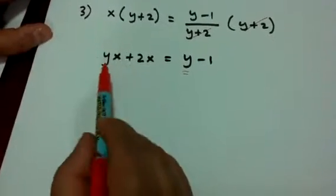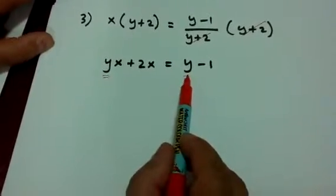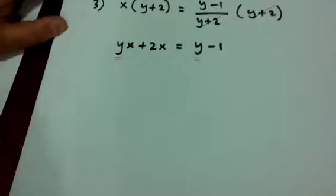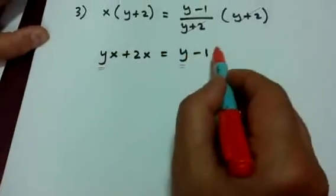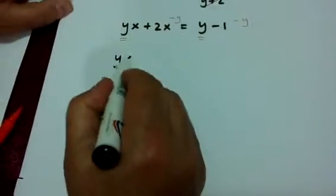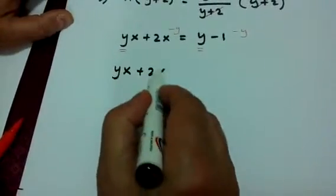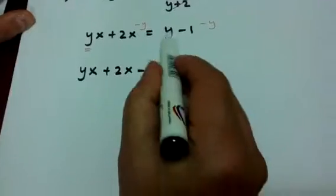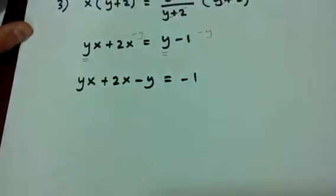So this y term in yx and this term in y should be on the same side. How do we do this? We eliminate y here and minus y here. So we end up with yx plus 2x minus y. y minus y gives you 0 and that gives you negative 1, minus 1.